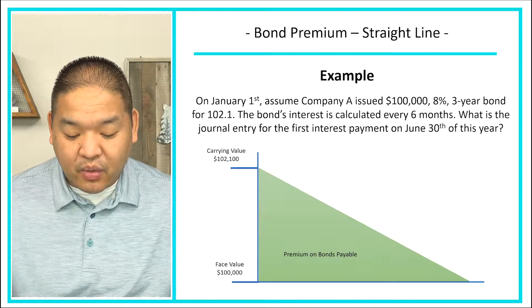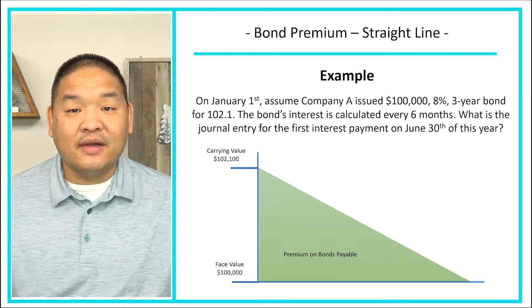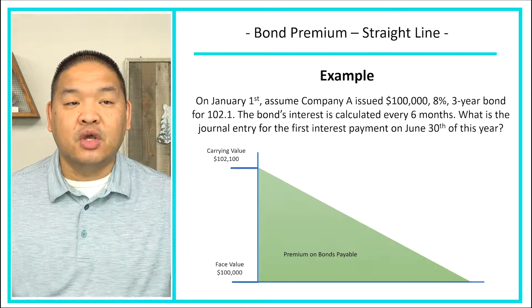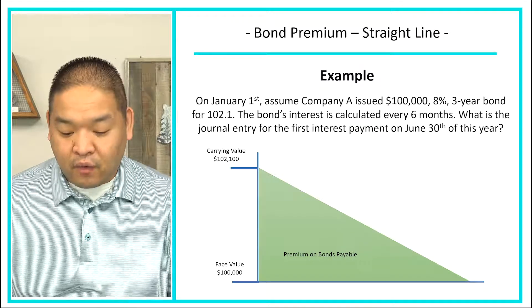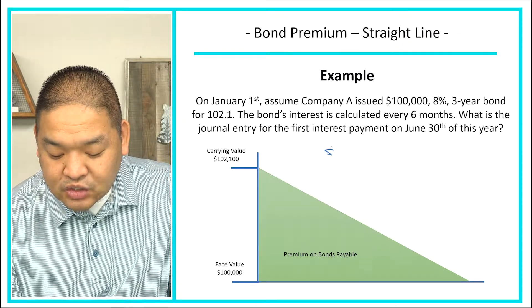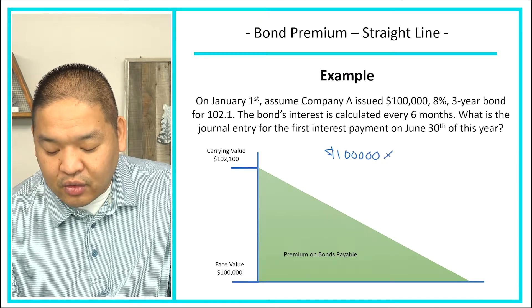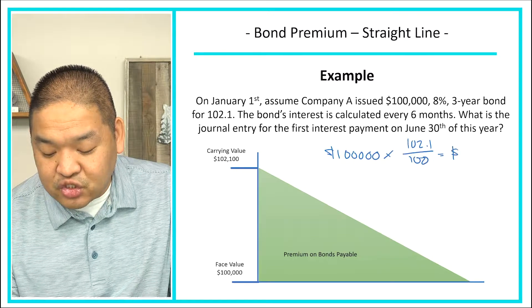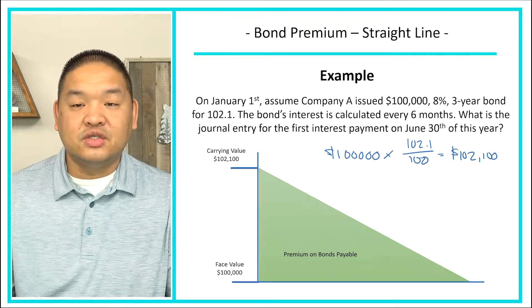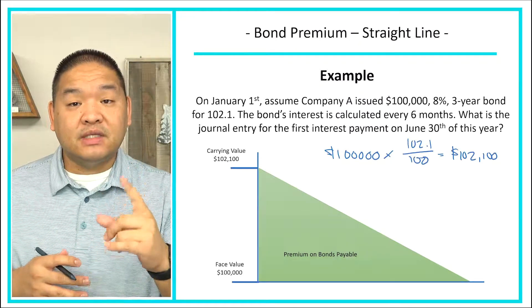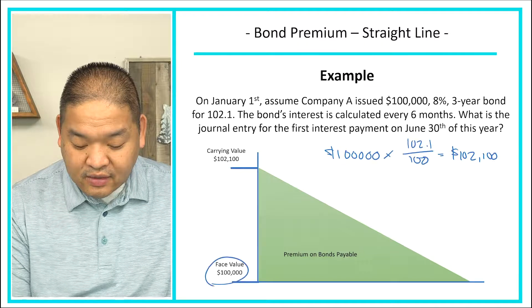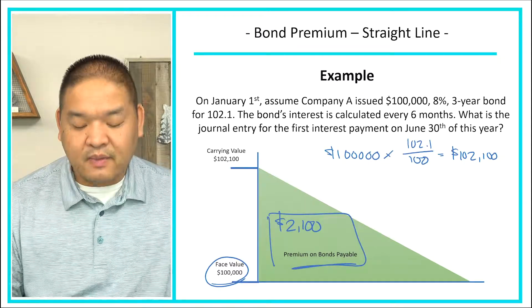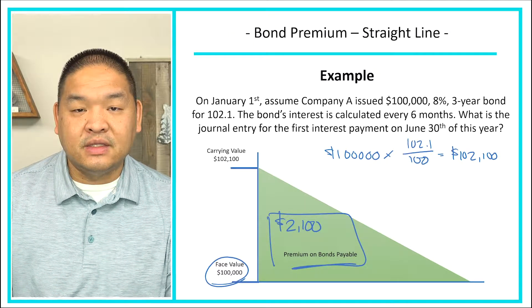Assume on January 1st, Company A issued a $100,000, 8% three-year bond for 102.1. To calculate how much we issued it for, we take the bond price of $100,000 and multiply it by 102.1 over 100, giving us $102,100. So that's how much we received, but the bond is worth $100,000. Our carrying value difference is $2,100 — that's the premium we're going to amortize over its life.